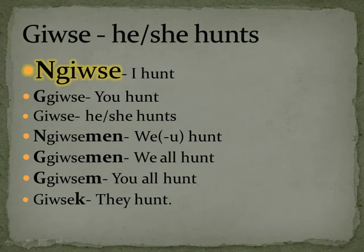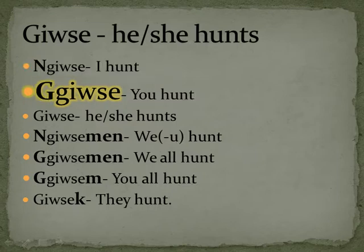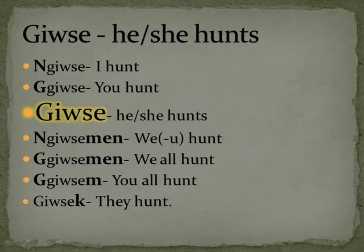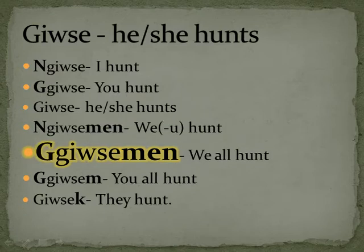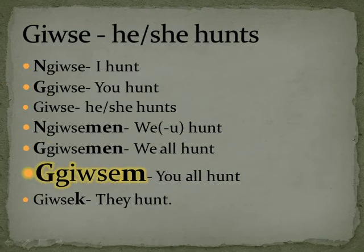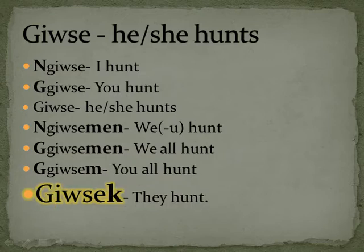When a W follows an I, the I already sounds like E in Potawatomi and that W sounds like more of an O, so it's gilse. Nagilse — I hunt. Gagilse — you hunt. Gilse — he or she hunts, or wgiyose, or gilse-wek. Nagilsemen — we but not you hunt. Gagilsemen — we all hunt. Gagilsem — you all hunt. And gilsek — they hunt.